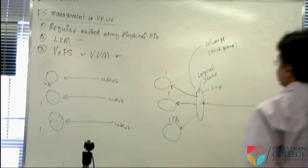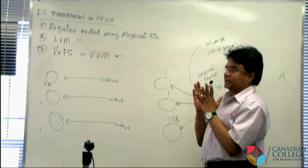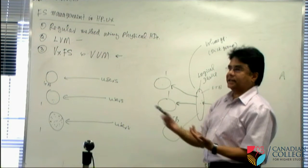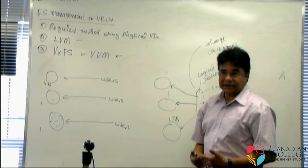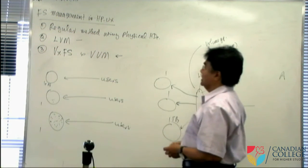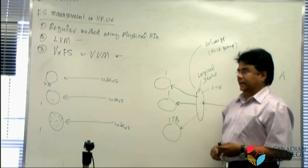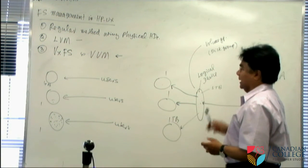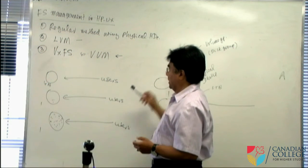In HP Unix, file systems are managed three ways: using regular physical devices as-is; using logical volume manager; or using Veritas file system and Veritas volume management. With the regular method, if a partition or slice gets full, you must find a larger slice, back up, and restore the data. The data may get lost and time is wasted. So we use volume management instead.